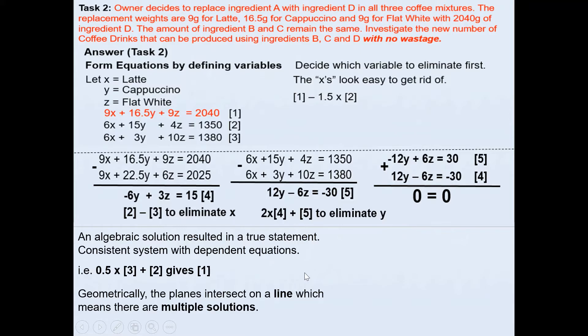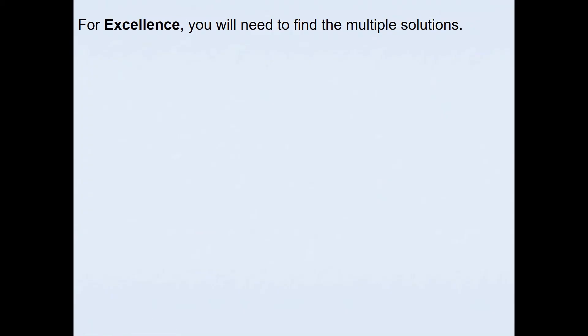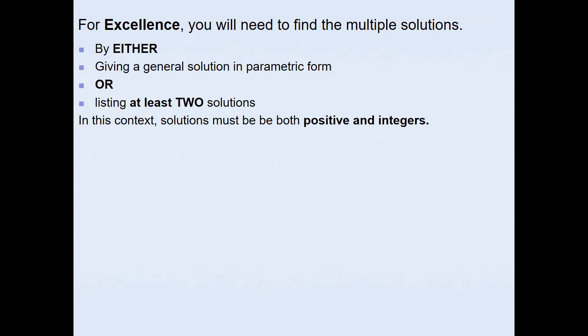This will lead to multiple solutions. Geometrically, we can see that the planes will intersect on a line. You will have multiple solutions over here. For excellence, you will need to find the multiple solutions. This can be done either by giving a general solution in parametric form, or we can list at least two possible solutions for this scenario. In this context, you need to realize that solutions must be both positive and integers, because we cannot have a decimal number or negative number of cups of coffee that can be produced.